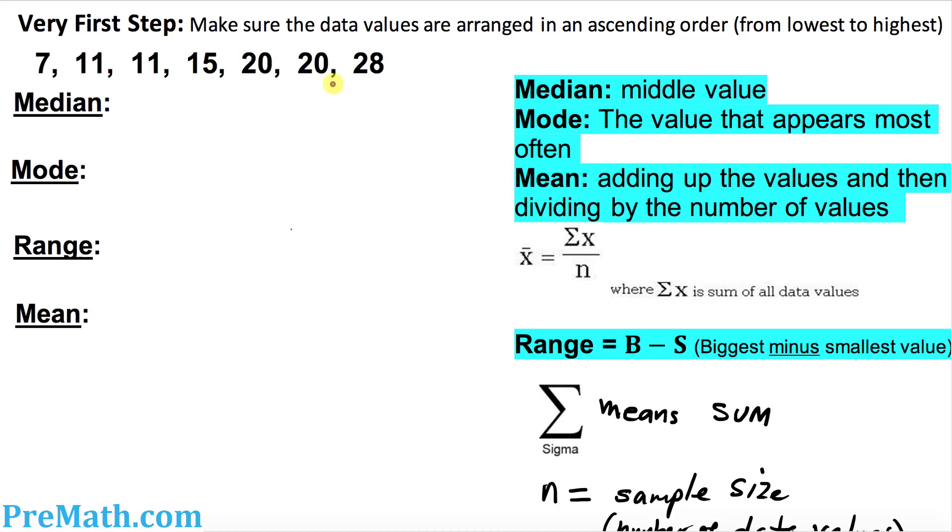So the very first step is to make sure that the given data has been rearranged from lowest to highest order. That means in an ascending order. You can see that it starts off with the lowest value and goes all the way to the highest, which is 28.